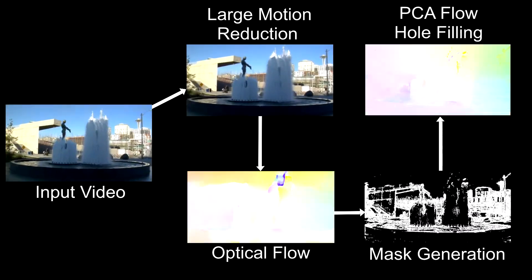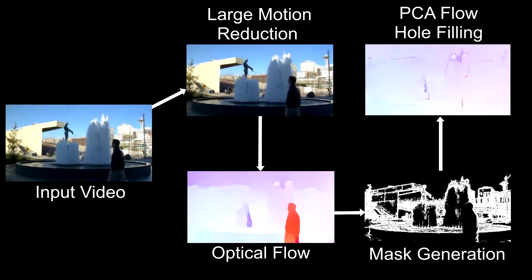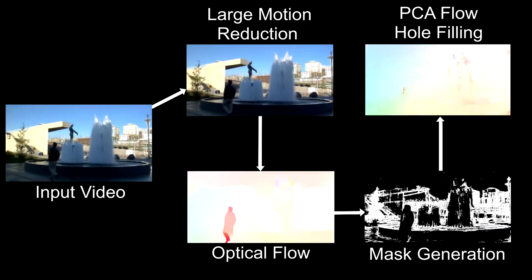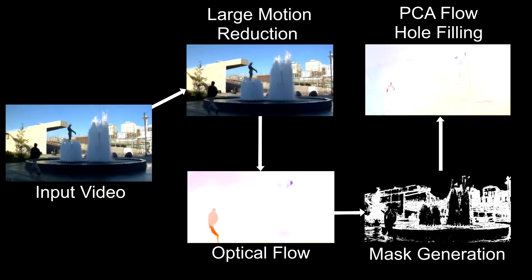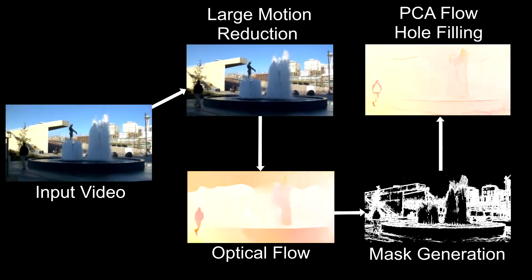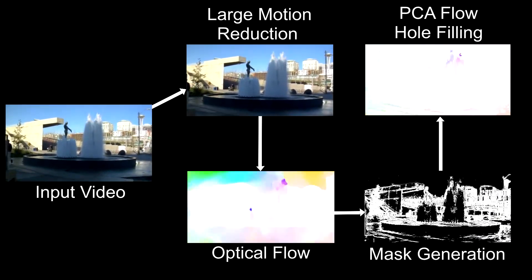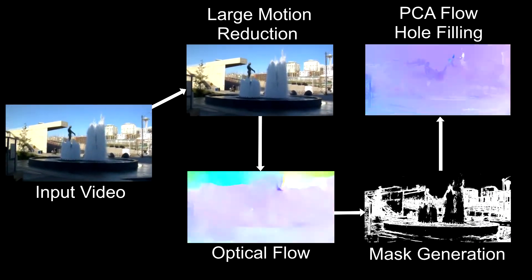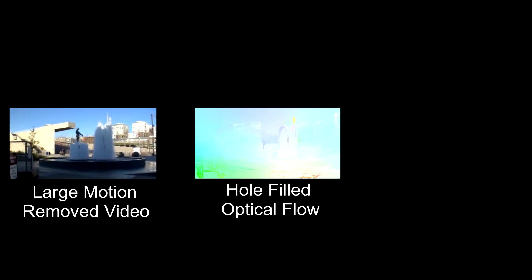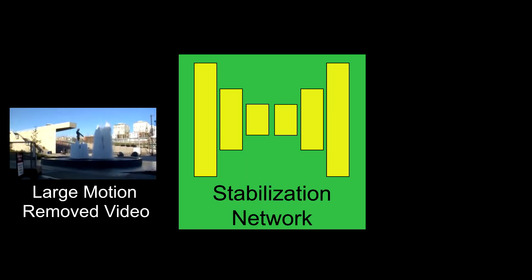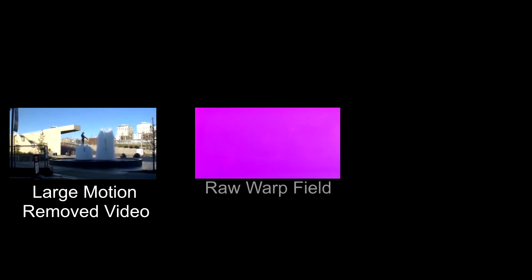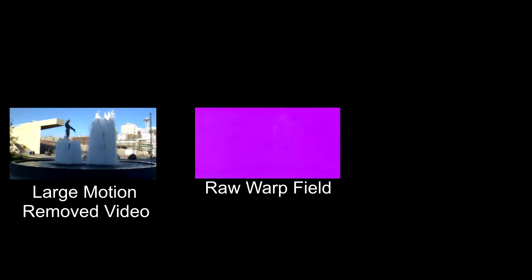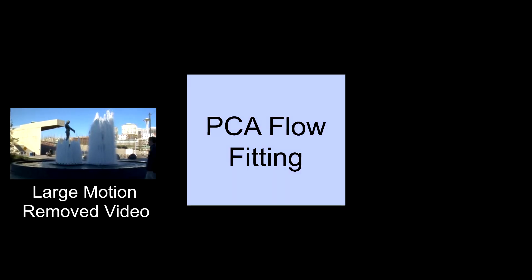We fit the PCA flow to the valid regions and use the values in the invalid regions to in-paint the invalid regions in the raw optical flow. We train a stabilization network that infers the warp field for each frame from the in-painted optical flow field.